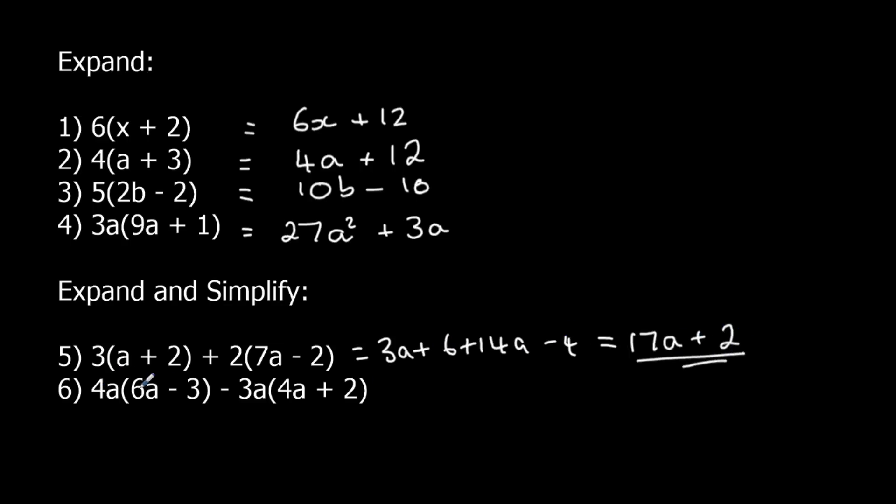Here I've got 4a times 6a, 24a squared. 4a times minus 3, minus 12a. Minus 3a times 4a, minus 12a squared. And minus 3a times 2, minus 6a. Simplifying, I've got 24a squared take away 12. That's 12a squared. And minus 12a, minus 6a, minus 18a.